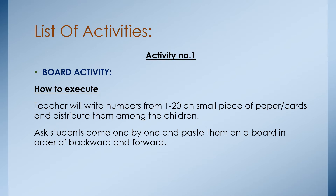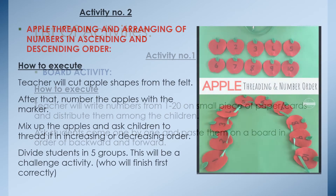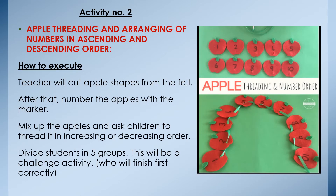Activity one: the number board activity. How to execute this activity — the teacher will write numbers from 1 to 20 on small pieces of paper or cards and distribute them among the children. Students come one by one and paste them on a board in order, forward and backward.